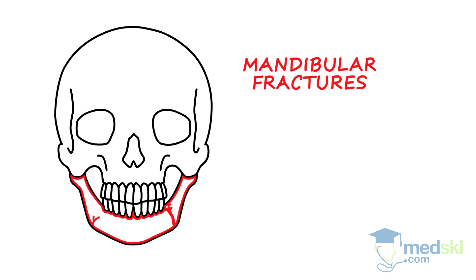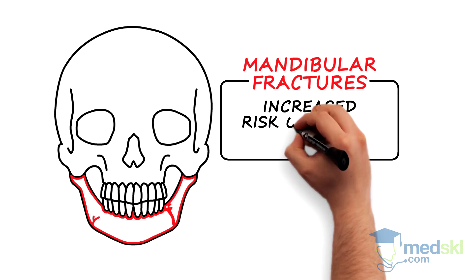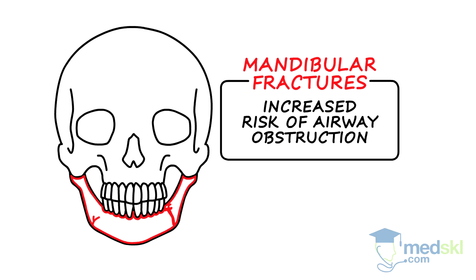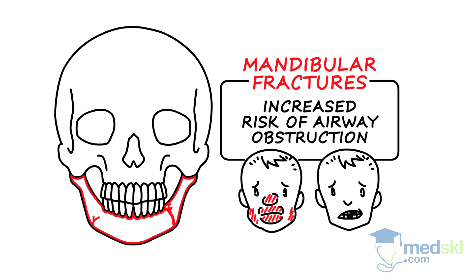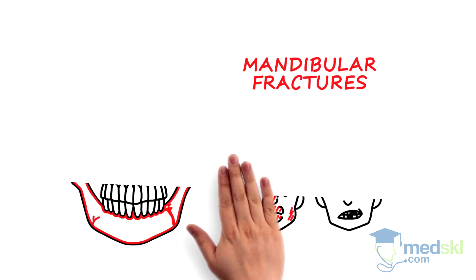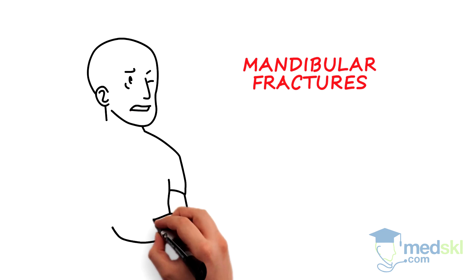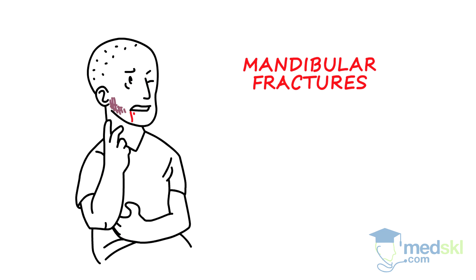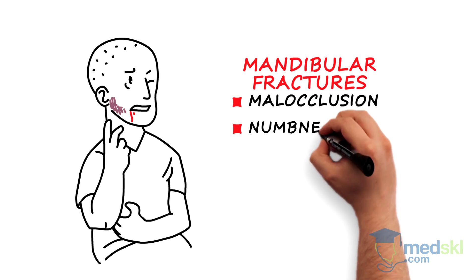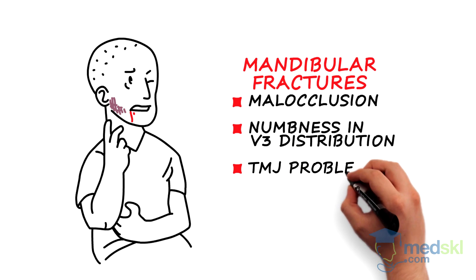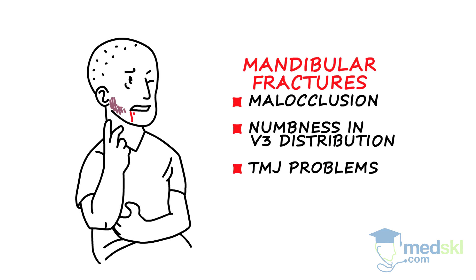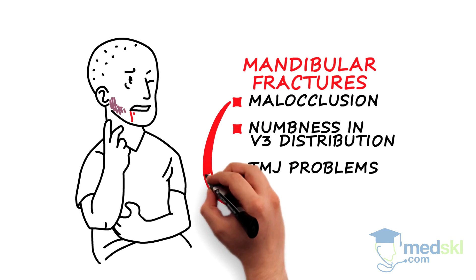Mandibular fractures occur less commonly but carry an increased risk of airway obstruction secondary to swelling and teeth displacement. Fractures of this bone can cause malocclusion, numbness in the V3 distribution of the trigeminal nerve, and temporomandibular joint problems. If malocclusion is present, prepare for early surgical intervention.